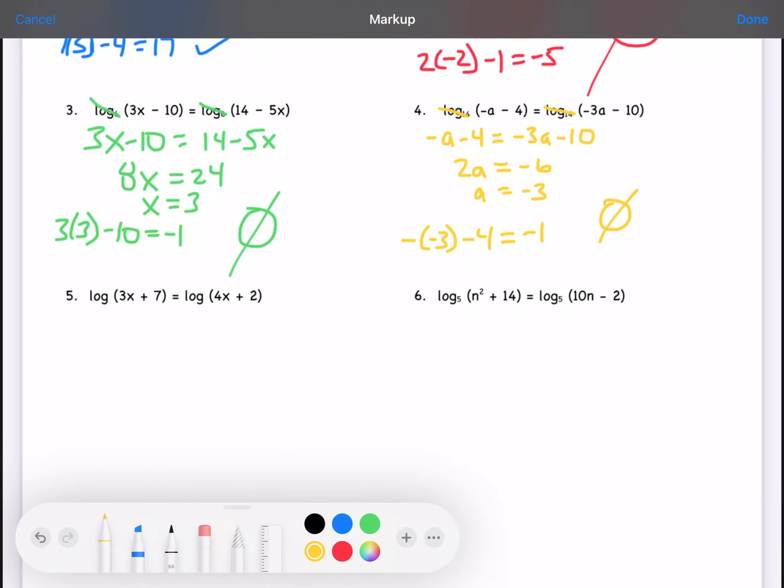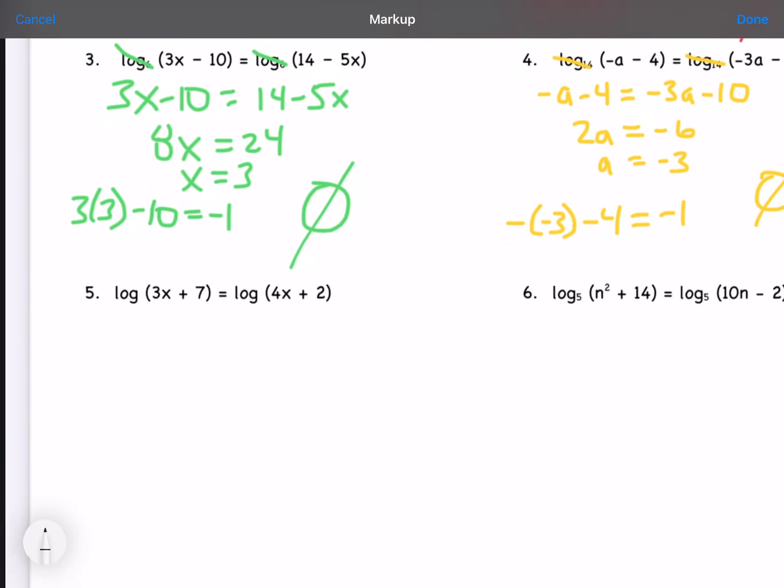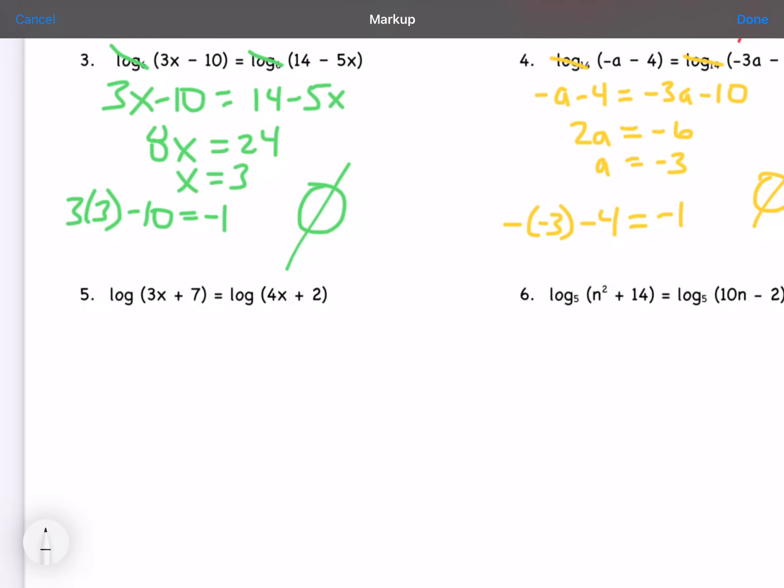So let's look at 5. I have log of 3x plus 7 equals log of 4x plus 2. Get rid of my logs. Move the x's over and the 2 over. I get x equals 5.